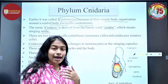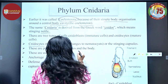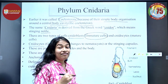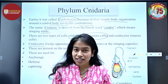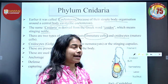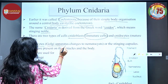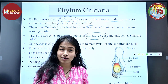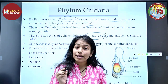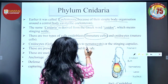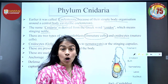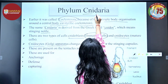There are two types of cells: cnidoblasts, which are the immature cells, and when cnidoblasts become mature they are called cnidocytes. The Golgi apparatus of cnidocytes changes to form nematocysts or stinging capsules. Because of the presence of these nematocysts or stinging cells, the phylum has got its name — Phylum Cnidaria.